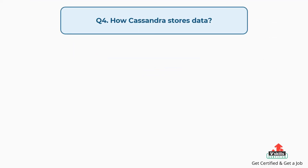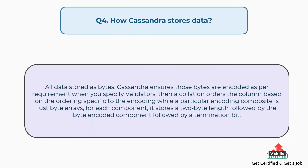Question number four: How does Cassandra store data? All data is stored as bytes. Cassandra ensures those bytes are encoded as per requirement when you specify validators. A collation orders the column based on the ordering specific to the encoding, while a particular encoding composite is just byte arrays. For each component, it stores a two-byte length followed by the byte-encoded component followed by a termination bit.